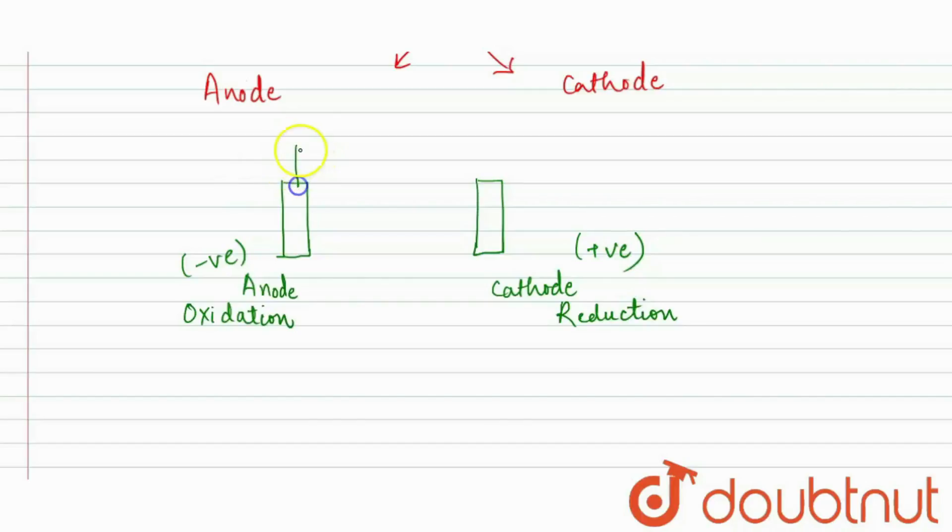So in a cell what happens? There is transfer of electrons, electron transfer from where? Anode to cathode.